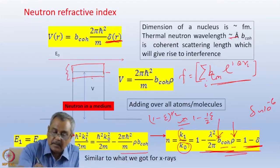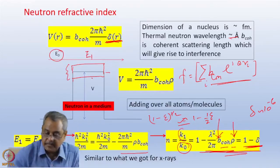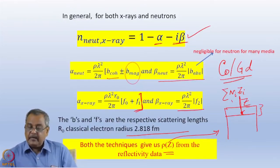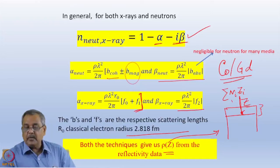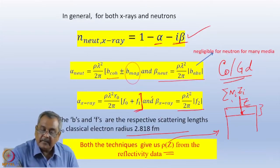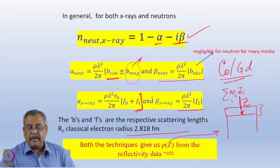This comes from assuming the wave vector k changes as the neutron travels in the medium, where the energy was E0 outside and E1 or E-prime inside. Now, the refractive index depends on electron density in the case of x-rays, whereas for neutrons it depends on coherent scattering length density. For a magnetized medium, it also depends on the magnetic scattering length, which is added or subtracted to the nuclear part depending on whether the neutron polarization is parallel or anti-parallel to the medium.